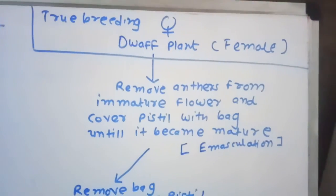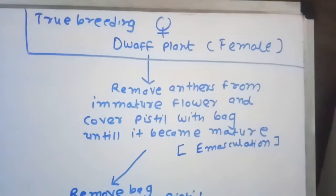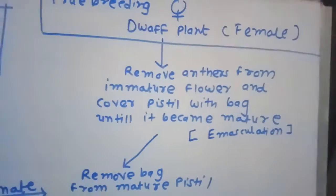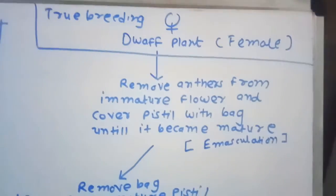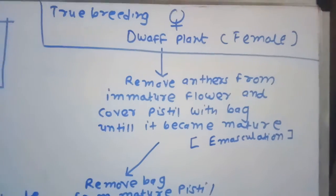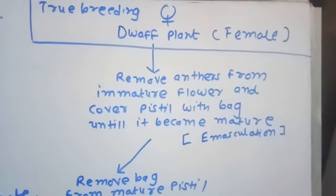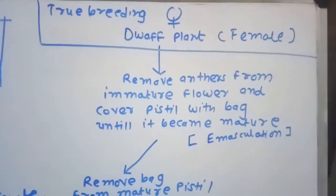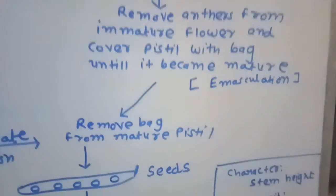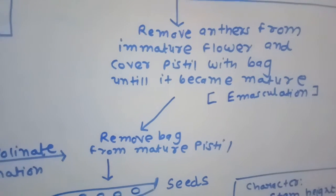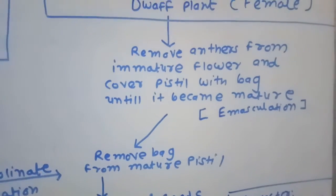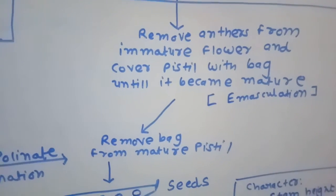He first carefully removed the anthers from the immature flower without damaging other parts of the flower. Then he covered the pistil — that is, the gynoecium — with a bag. He then kept the gynoecium covered within the bag until it matured. Once the flower became mature, he removed the bag and kept the pistil open.